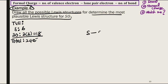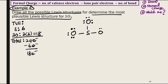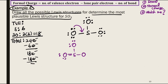We draw the skeletal structure with S as the central atom and O as terminal atoms, using 6 electrons, leaving 18 electrons remaining. We place 6 electrons on each terminal atom, using all 18. We then check if sulfur has achieved an octet — it only has 6 electrons, so we move a lone pair from a terminal atom to form a new bond, giving S 8 electrons. This is Structure A for SO₃.